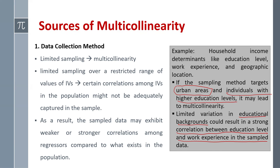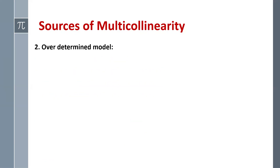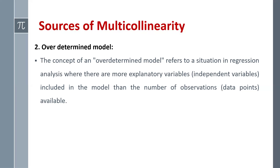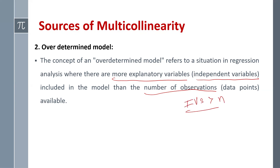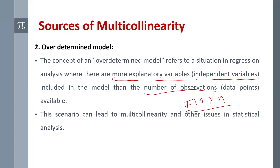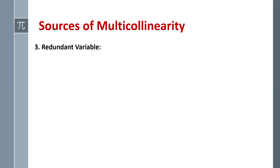The second source is an over-determined model. This refers to a situation in regression analysis when there are more explanatory variables — independent variables — included in the model than the number of observations. When the number of independent variables exceeds the number of observations, we have an over-determined model, which can lead to multi-collinearity.